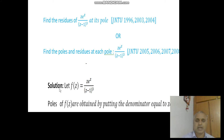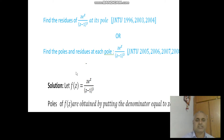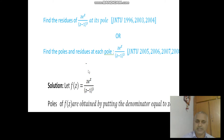Poles of f of Z are obtained by putting the denominator equal to 0. The denominator is (Z minus 1) whole cube. So (Z minus 1)³ = 0 gives Z = 1, repeated 3 times. Therefore Z = 1 is the pole of order 3.